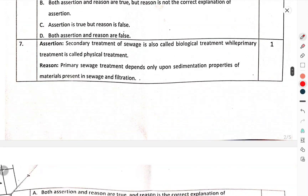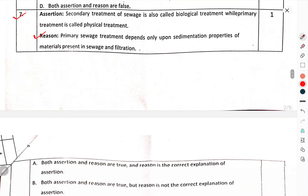Question number 7 — Secondary treatment of sewage is also called the biological treatment, while primary treatment is called the physical treatment. Reason: Primary sewage treatment depends upon the sedimentation properties of the material present in the sewage and filtration.